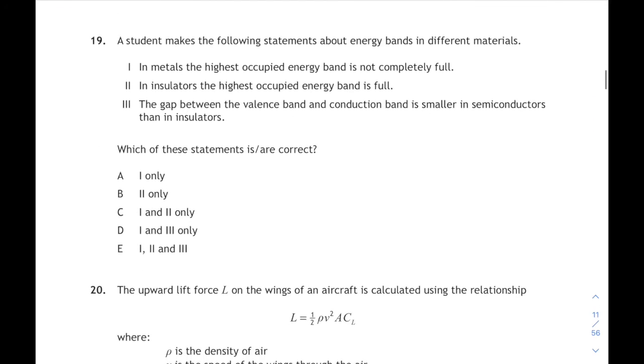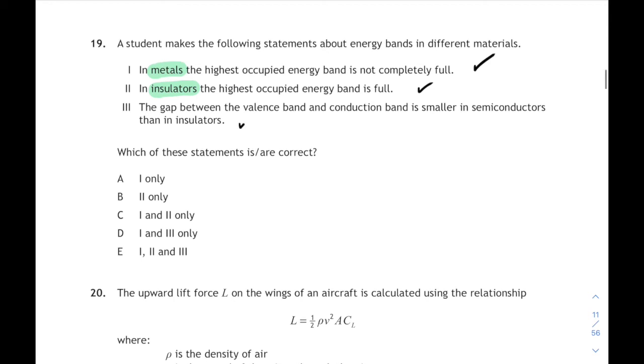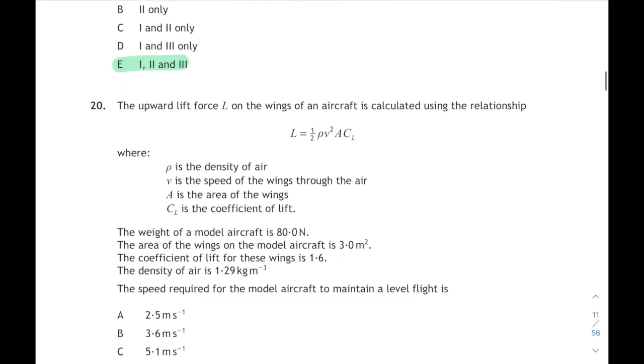Question 19. Triple statement question. Student makes the following statements about energy bands in different materials. In metals, the highest occupied energy band is not completely full. That's true. You need free electrons in the conduction band. In insulators, the highest occupied energy band is full. Yes, it is. That's the valence band and it's full in insulators. And the gap between the valence and the conduction band is smaller in semiconductors than in insulators. Yes, it is. All three statements are true. 1, 2 and 3 are correct. 19 E.